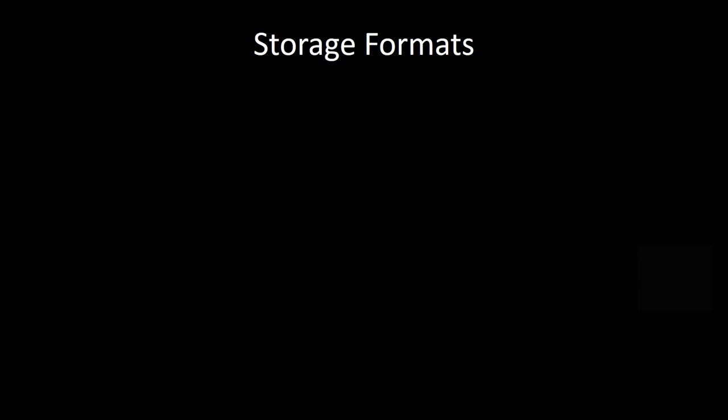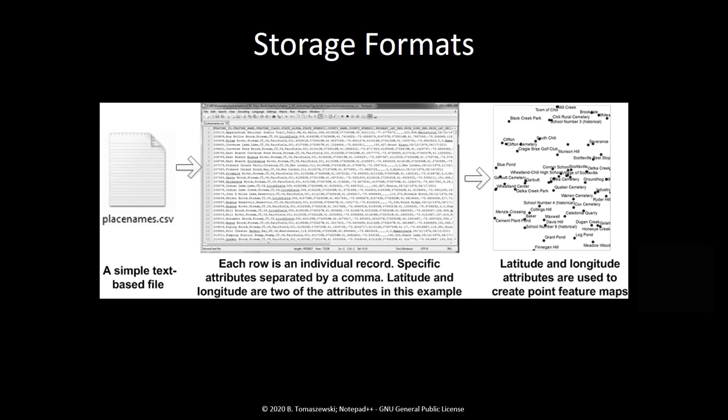Once GIS data is created, or while it is being created, it must be stored in some type of data repository so that it can later be queried, retrieved, disseminated, and updated. Data repositories for GIS data are diverse. This image shows one of the most basic yet still commonly used GIS data storage formats, a comma-separated values or CSV file. In this example, place name features are stored in a CSV file. CSV files are an ASCII-based text file where data is structured using commas to define data columns, and each line in the file represents a single data record.